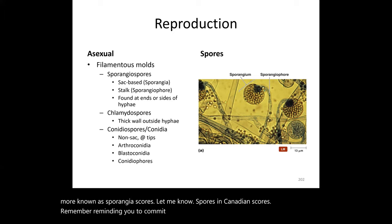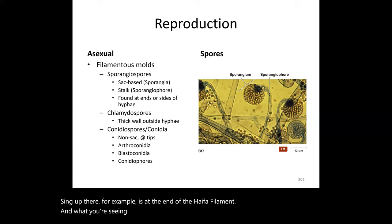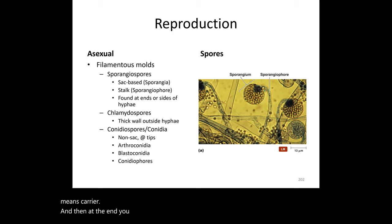Asexually, fungi can produce several spore types: sporangiospores, chlamydospores — the resting-stage solid spores — and others. The sporangiospore you see forms at the end of a hypha. The stalk carrying it is called the sporangiophore — the suffix '-phore' meaning carrier. At the end of that stalk is the spore sac called the sporangium.